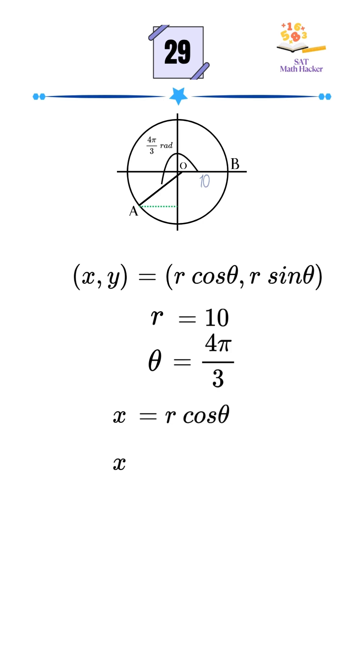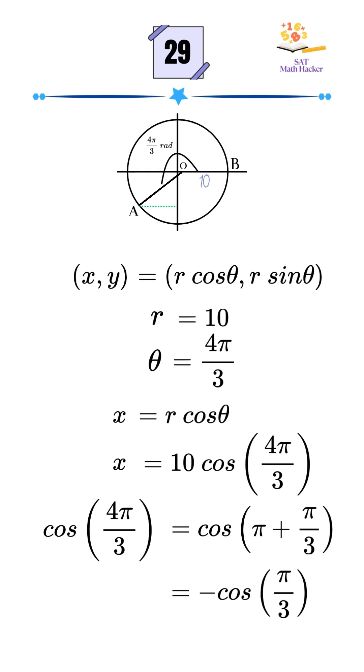Plugging in the values, x equals 10 times cos 4π over 3. Now, cos 4π over 3 is the same as cos(π + π/3), which becomes negative cos(π/3) by using the identity cos(π + α) equals negative cos α.